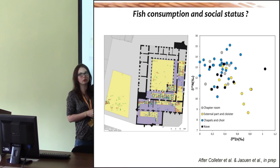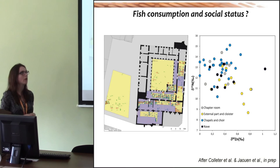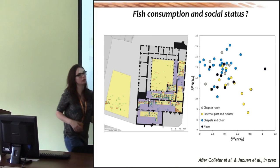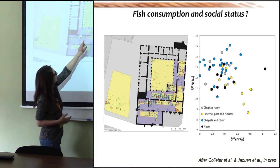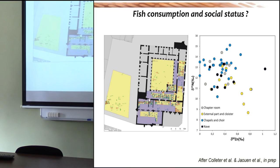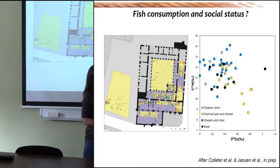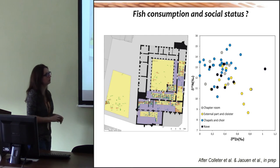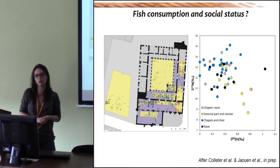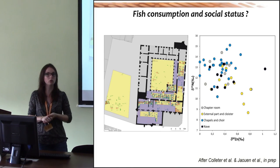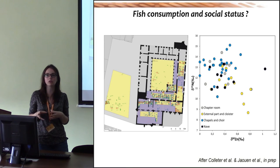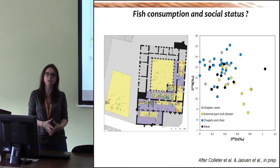We also looked for differences related to social status, as we have different burial locations in the convent where samples were taken — the church with the choir and chancel expected to hold noble individuals, four individuals in the external part of the church, and possibly the cloister. Most individuals show the same isotope signature for zinc and nitrogen, except some buried outside the convent, possibly the poorest. However, this is difficult to interpret as social status differences since most outliers were non-locals, suggesting geographic origin related to fish consumption rather than social status.